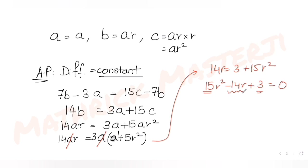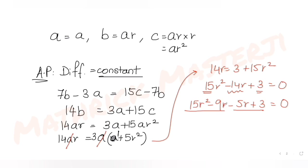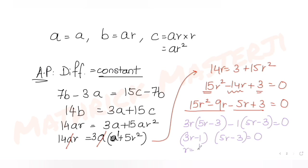Those two numbers are 9 and 5, so we split the middle term: 15r² minus 9r minus 5r plus 3 equals 0. Grouping and factoring the first two and last two terms gives us (3r minus 1)(5r minus 3) equals 0. Therefore r equals 1/3 or r equals 3/5.